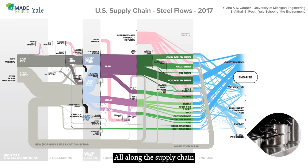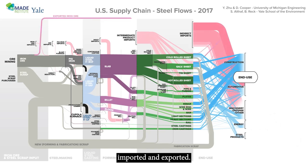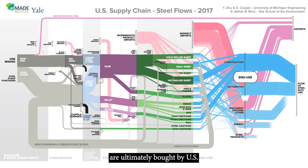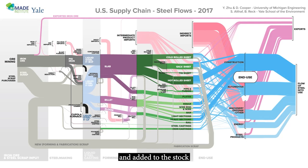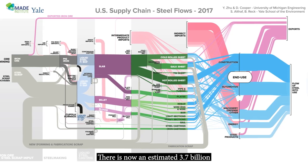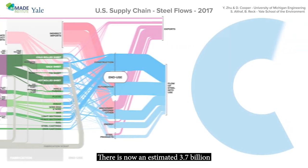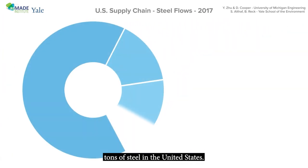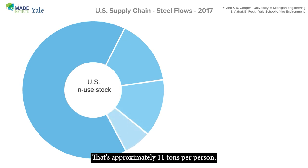All along the supply chain, steel is also being imported and exported. These end-use products are ultimately bought by US consumers and businesses and added to the stock of in-use steel in the United States. There is now an estimated 3.7 billion tons of steel in the United States — that's approximately 11 tons per person.